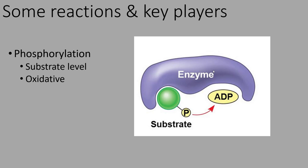The first new term we're going to hear a lot in this chapter is phosphorylation. Phosphorylation is the act of putting a phosphate group onto something — it doesn't matter what the something is. A molecule that does not have a phosphate group gets one stuck to it; that act is called phosphorylation. The molecule that received the phosphate group is said to have been phosphorylated.